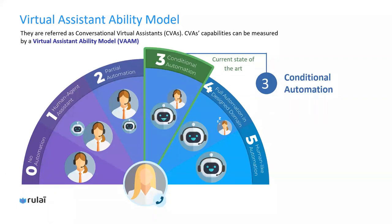So let's look at the bots deployed today. Most of them are level one or level two bots. However, the state of the art is level three — the best virtual assistant can handle tasks they are trained to handle. To give you a better idea about the difference between level two, where most bots are, and level three, where the state of the art is, let me show you two demos.